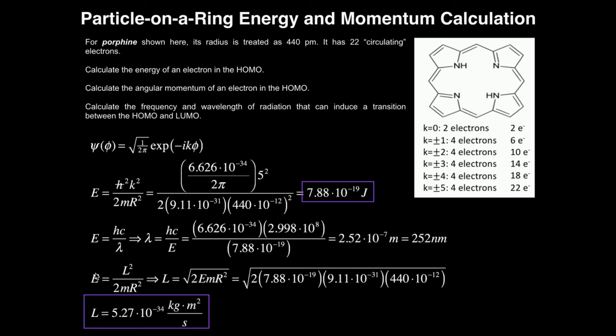Let's calculate the angular momentum of this electron using the energy we calculated. So the energy is equal to the angular momentum squared divided by the quantity 2m times r squared. So if we solve this for the angular momentum L, we get L is equal to the square root of the quantity 2emr squared. Let's plug our numbers in. So the square root of 2 times the energy...